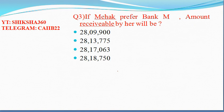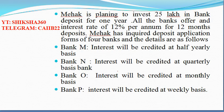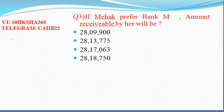Question three asks: if Mahek prefers Bank M, what is the amount receivable by her? We need to remember that Bank M compounds interest on a half-yearly basis, which is very straightforward.